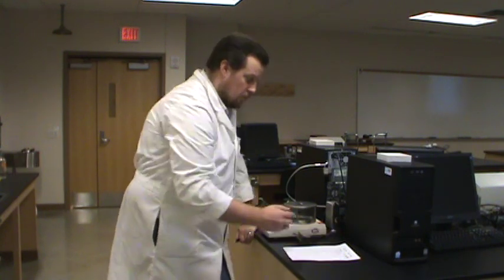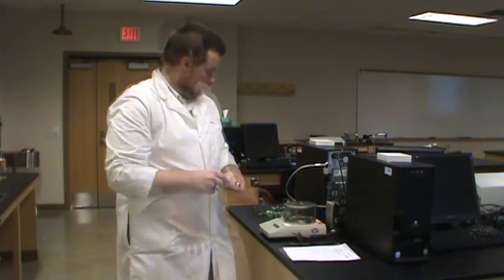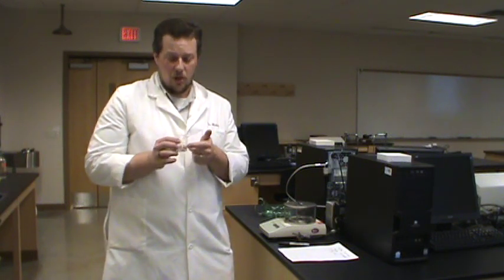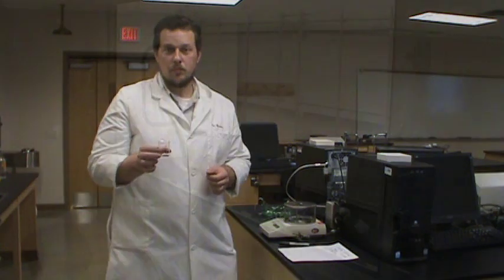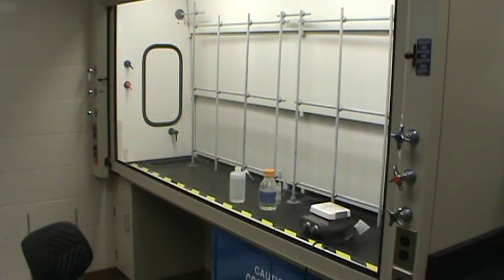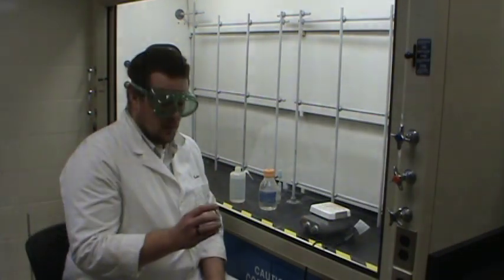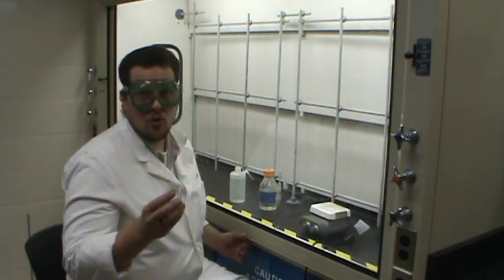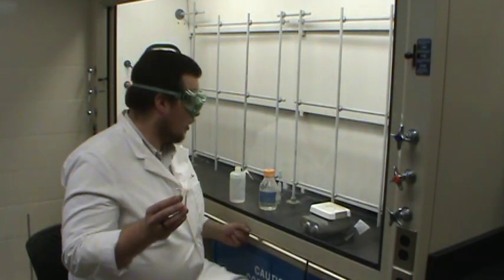So that takes care of getting the ore out of the vial and into the beaker, but now how do we get this ore in solution? We have to dissolve this by doing a digestion with acid, and to do that we better move into the hood. So we've got our ore in a beaker, and because we're using strong acid to dissolve it, we better work in the hood.